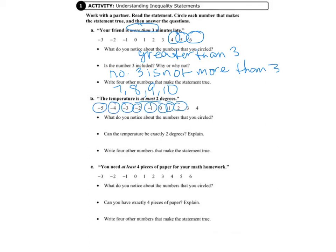So we circled two and all the numbers that are less than it. So what we notice about the numbers that are circled is that they are two or less.